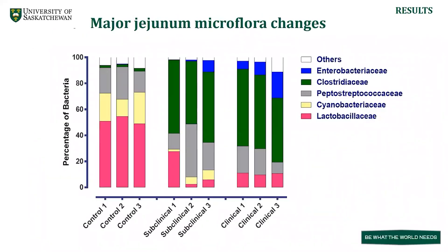We plotted a bar graph of three representative samples from each category, and we can see a clear pattern of disease progression. Lactobacillaceae was around 60 percent in control birds, decreasing to around 20 percent in subclinically affected birds and less than 20 percent in clinically affected birds. Cyanobacteriaceae was around 20 percent in control birds, coming down to 5 percent in subclinically affected birds, and completely absent in clinically affected birds. Clostridiaceae, around 1 to 2 percent in control birds, increased to 50 to 60 percent in necrotic enteritis affected birds, while Enterobacteriaceae went from less than 1 percent in control birds up to 20 percent in necrotic enteritis affected birds.